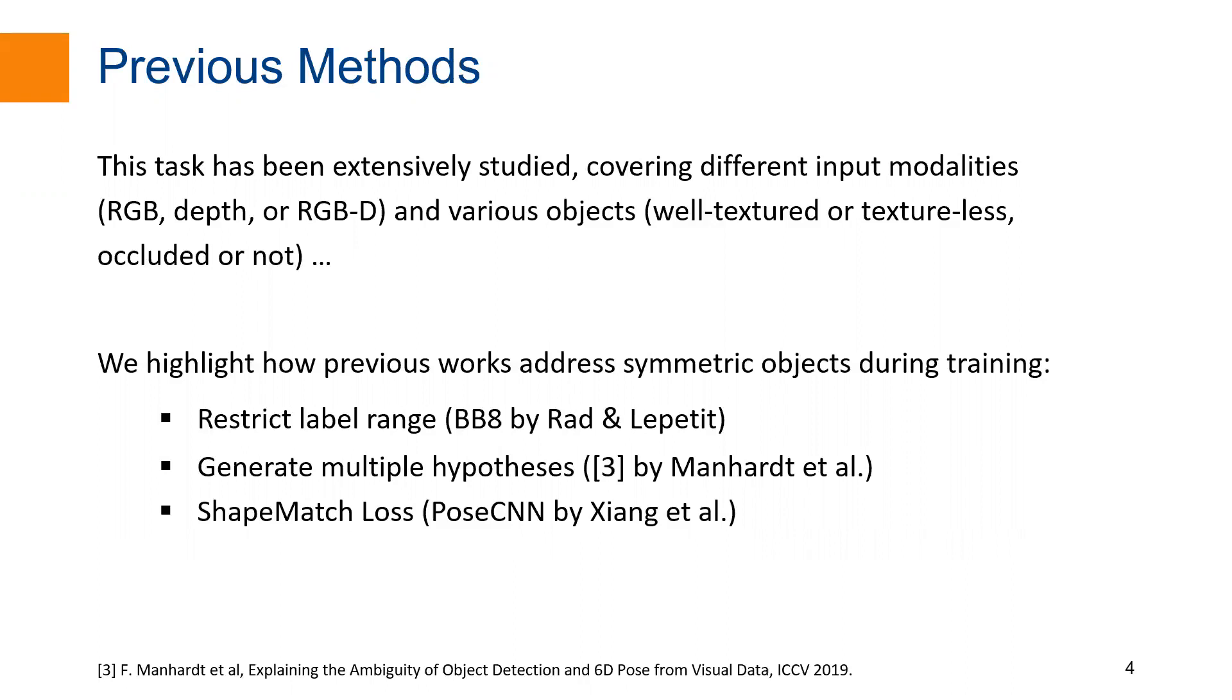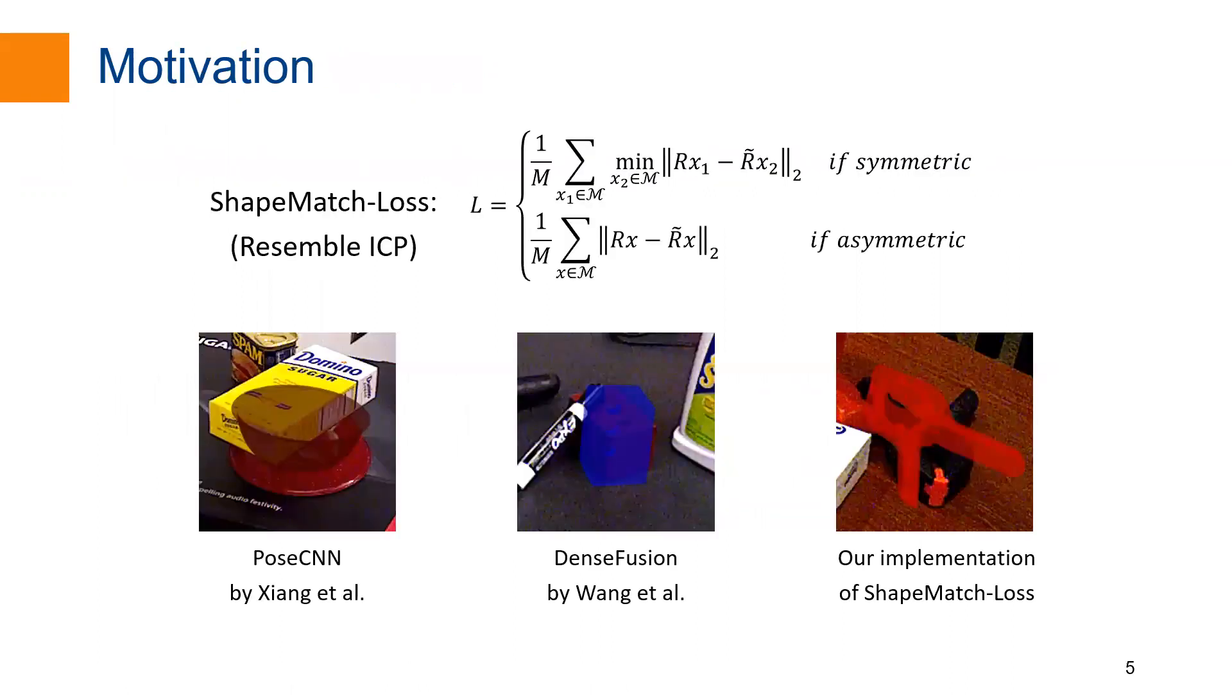The third approach is the ShapeMatch loss proposed in PoseCNN. Although ShapeMatch loss is easy to implement and needs no extra effort during inference, the network is prone to local optimum after the training is converged, as can be seen in the figure.